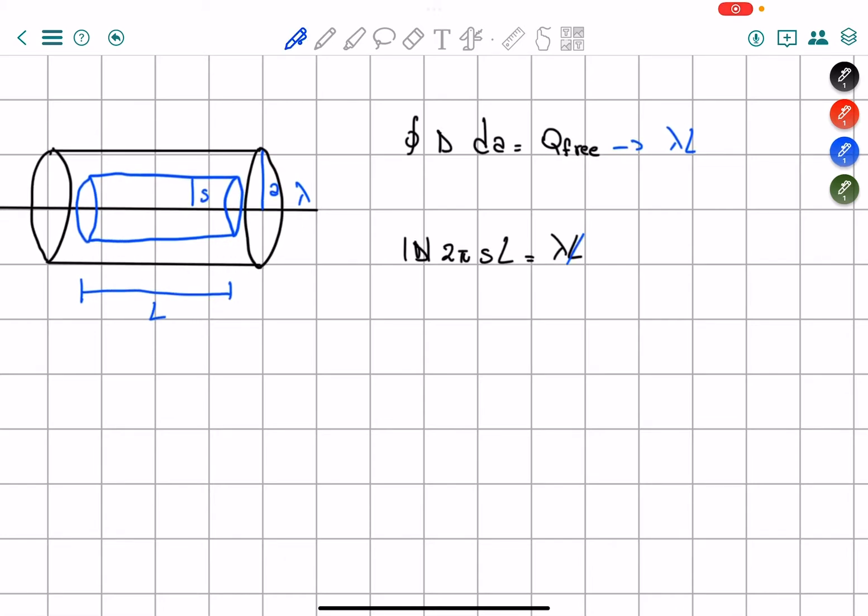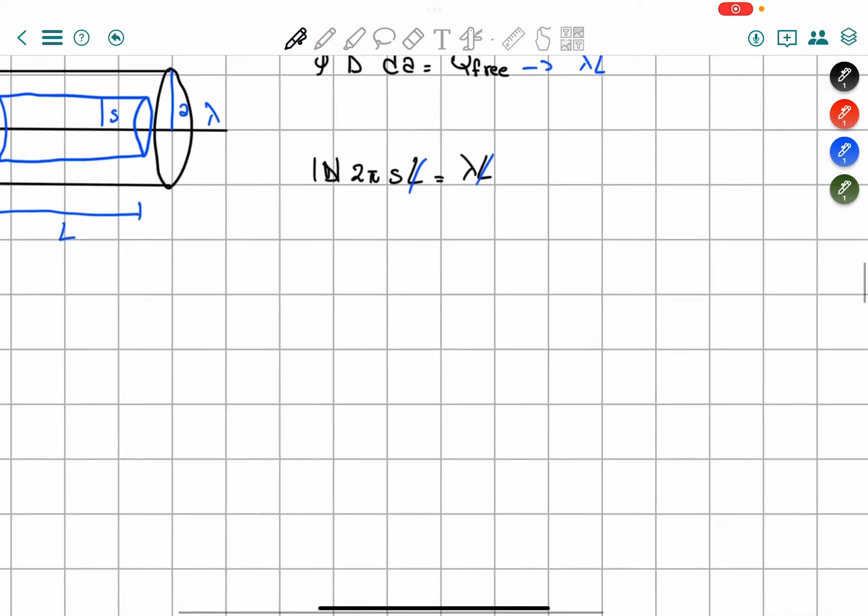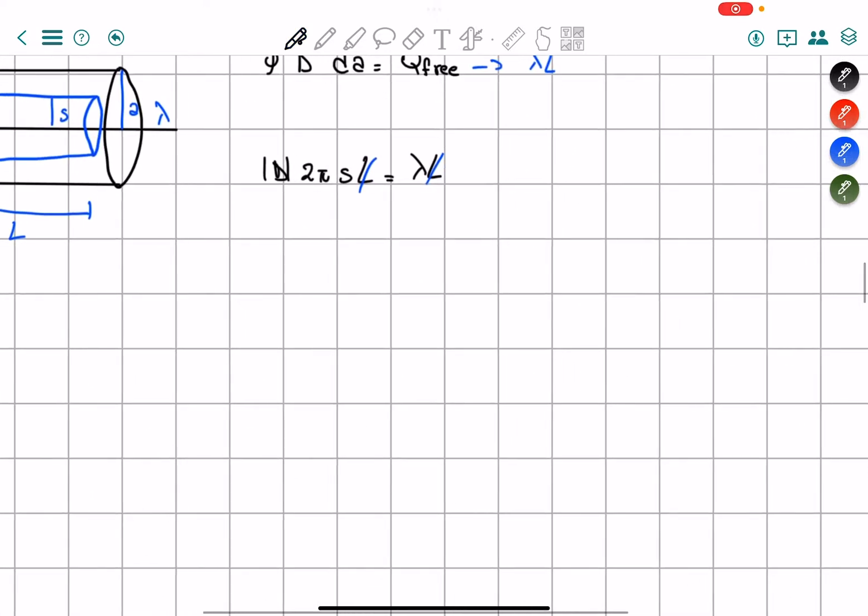And as you can see, we didn't rid of the L's because it is independent of the length of the wire. So we know that D is equals to lambda over 2 pi S.